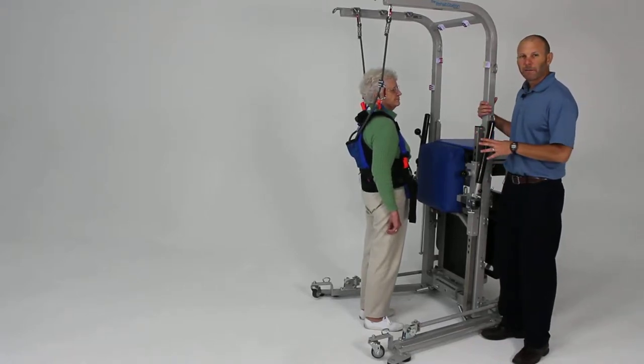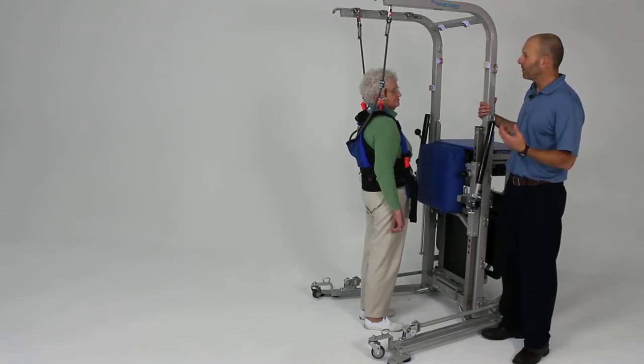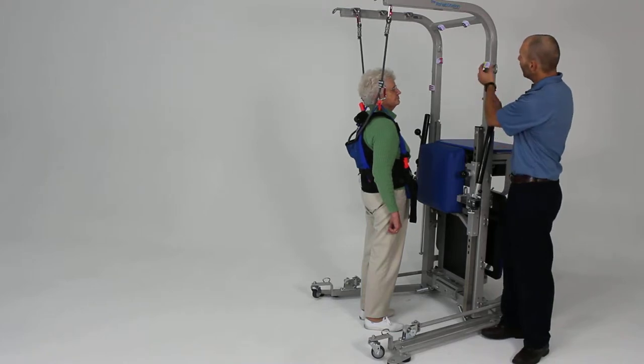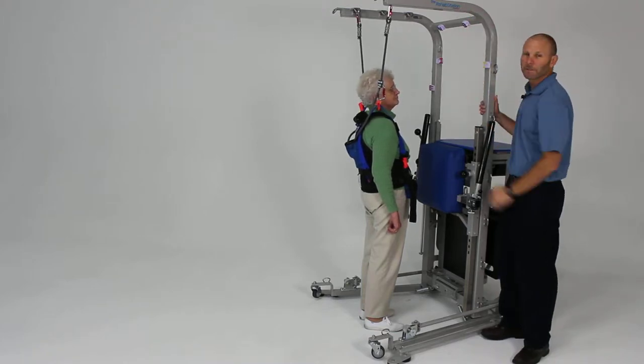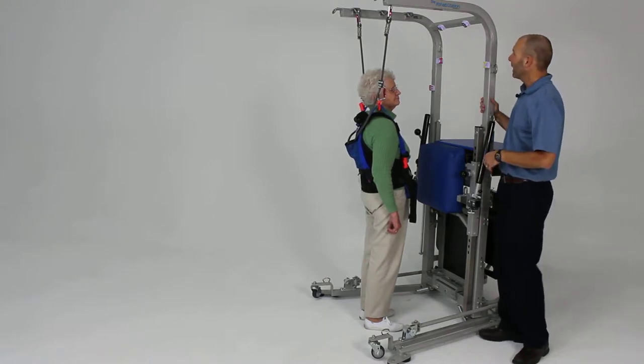The rehab station provides a great environment for doing lots of different activities. For the upper extremity, another thing you can utilize is that since it's made of metal, we can use magnets. We can place them in different positions on the unit to facilitate reaching activities.